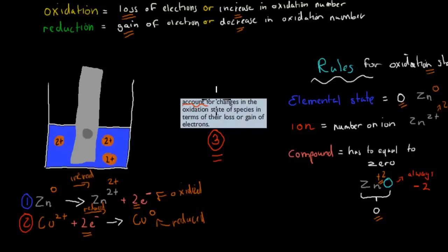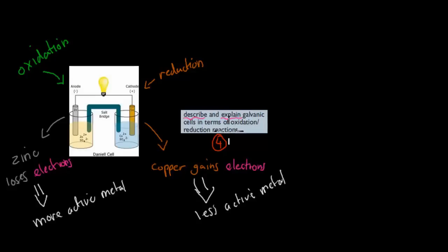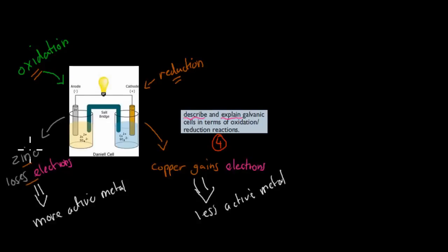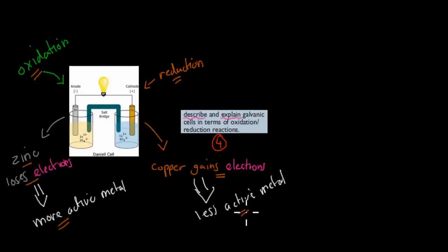Now we have to describe and explain galvanic cells in terms of oxidation and reduction. Galvanic cells have an anode, where oxidation occurs, and a cathode, where reduction occurs. The anode is zinc — zinc loses electrons — and those electrons move through the wire to copper, and copper gains those electrons. That's the description. The explanation is that zinc is the more active metal, so it loses electrons; copper is the less active metal, so it gains electrons. That's why we have a flow from zinc to copper.